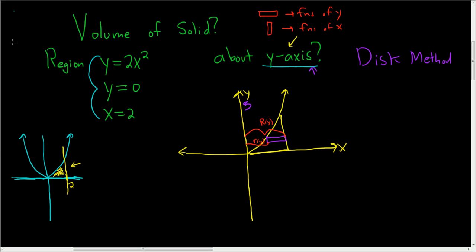Because we have functions of y, we actually have to take this and solve it for x. So let's go ahead and do that. We can divide both sides by 2, and we end up with y over 2 equals x squared. If we take the square root of both sides, we end up with x equals plus or minus the square root of y over 2. But since we're in quadrant 1 and x is positive, that means x is the square root of y over 2.